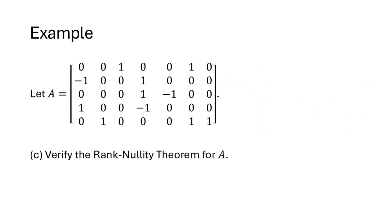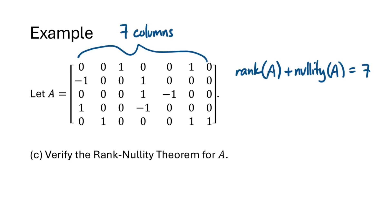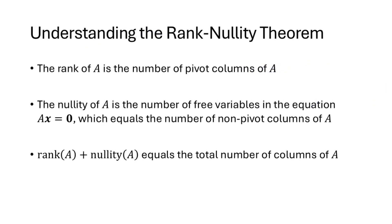The rank-nullity theorem tells us that the rank of A plus the nullity of A equals the number of columns of A. This matrix has seven columns, and rank 4 plus nullity 3 equals 7, so that checks out. We can compute rank and nullity more easily: the rank of A is the number of pivot columns, and the nullity of A is the number of non-pivot columns. Adding the pivot columns and non-pivot columns together gives the total number of columns. So all we need to do is row-reduce the matrix and count pivots and non-pivot columns to get the rank and nullity.